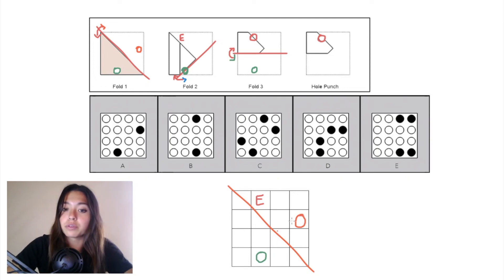This is our final pattern of only two hole punches, and that matches up with answer choice A. So A is the correct answer.